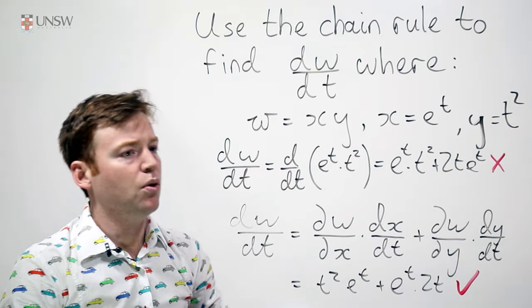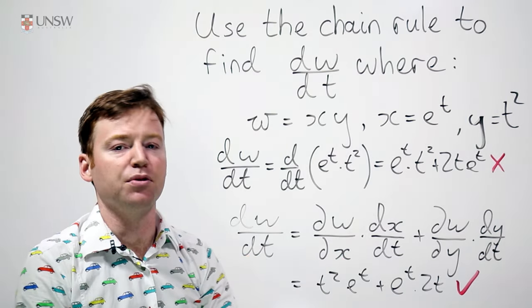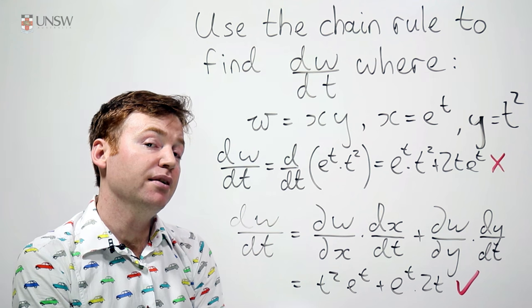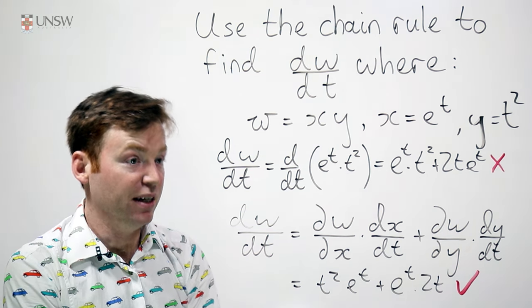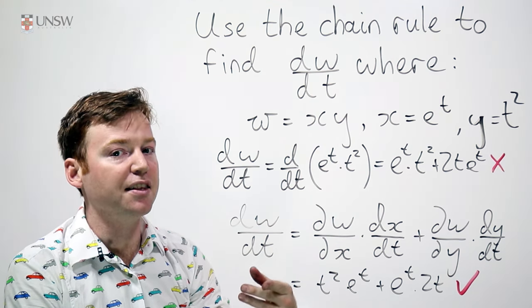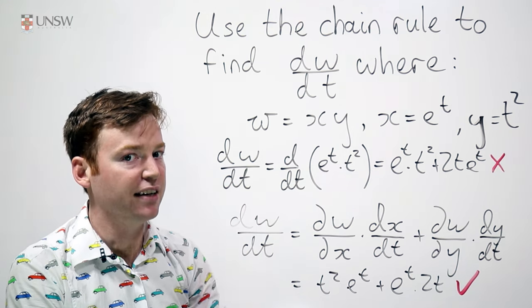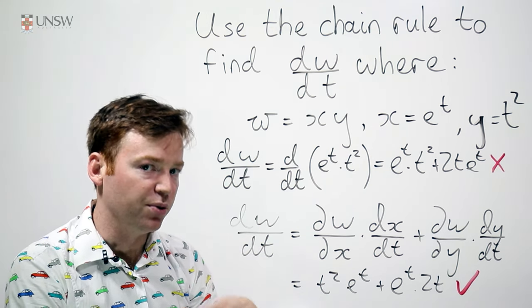You may be wondering, why would I bother using the chain rule when I could just use the product rule to get there? Well, you can't always use the product rule to get there. In this case, you can, but sometimes you can't directly take the derivative of w with respect to t. And nevertheless, you can take its derivative indirectly using the chain rule.